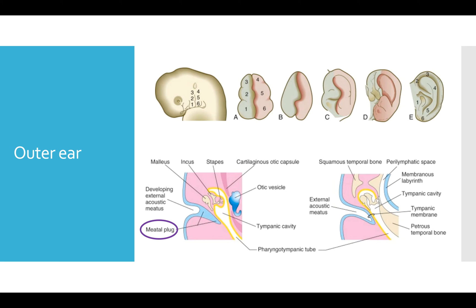4 is called the anti-tragus, 5 is called the anti-helix, and 6 is called the conca. And as these develop, you can see them form the adult structures of the pinna.